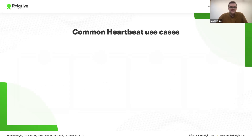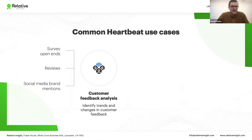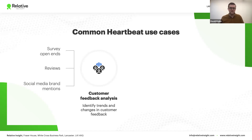Before handing over to Amy, I'll introduce two core use cases. The first is customer feedback analysis — identifying trends and changes in customer feedback from survey open ends, reviews, and social media brand mentions. Your top priorities may be ensuring good perception of value, product quality, and store experience. You define themes relating to each of those priorities, apply them on top of the data, and track how you're performing against them.